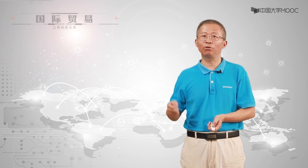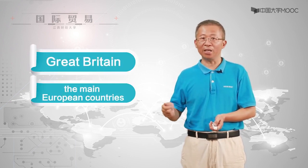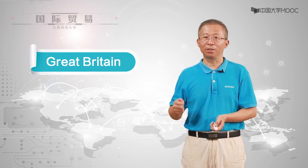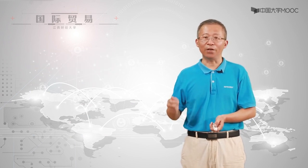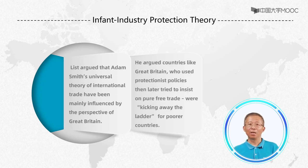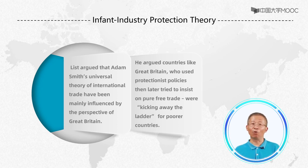After the first industrial revolution, List developed the infant industry argument to react to the divergence of industrial development between Great Britain, the main European countries, and the United States. At this time, Great Britain was more developed than those other countries, largely due to the fact that the industrial revolution took place mainly in that country. List argued that Adam Smith's universal theory of international trade had been mainly influenced by the perspective of Great Britain. He argued that countries like Great Britain, who used protectionist policy and then later tried to insist on pure free trade, were kicking away the ladder for poorer countries.